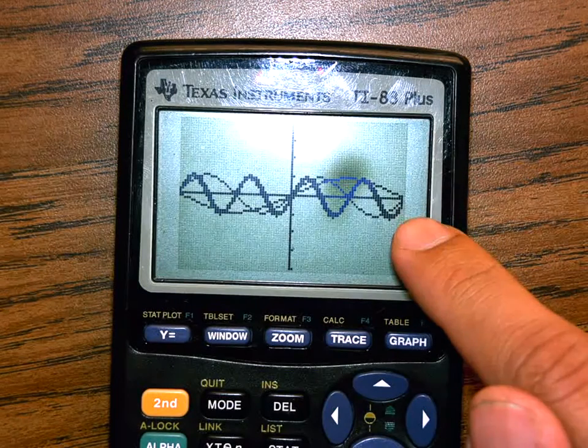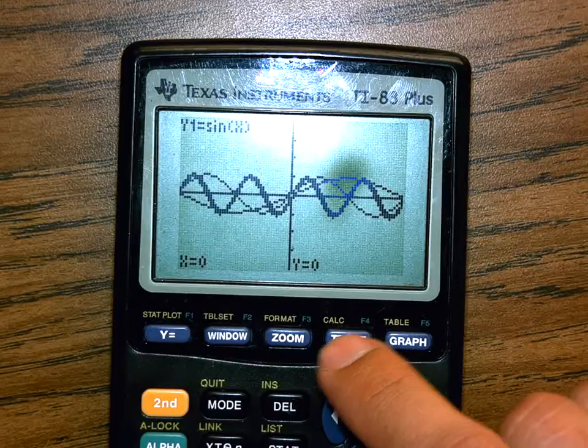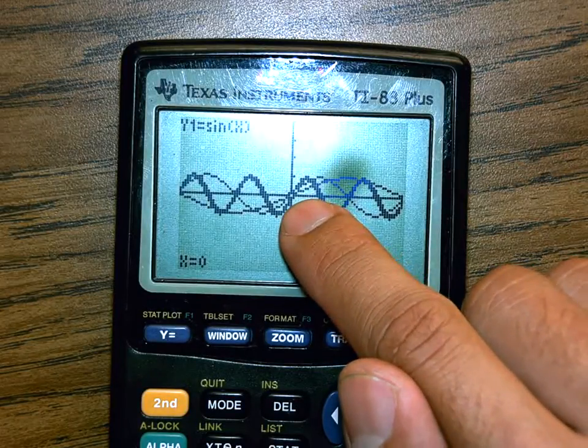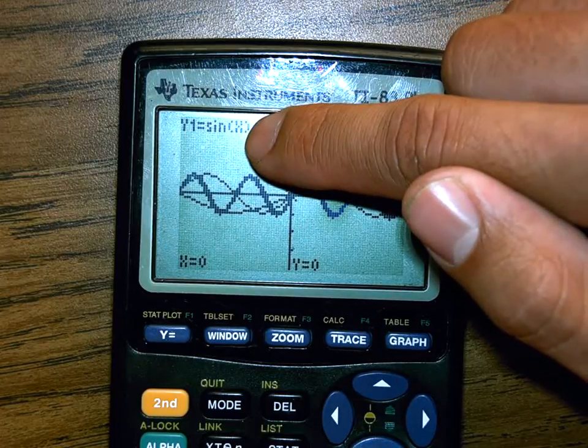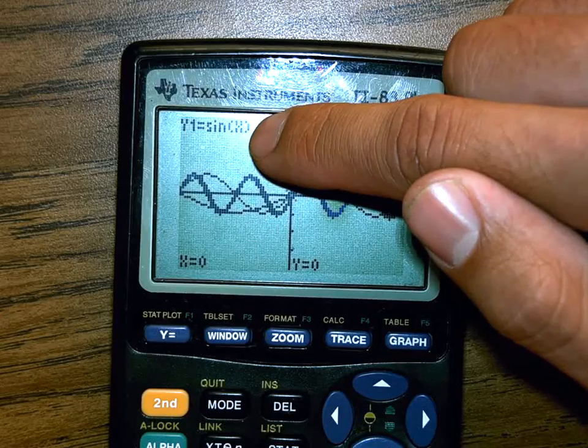Just want to show you one little thing. If I use the trace button on my calculator, if I press trace, what ends up happening is this little x shows up on my graph. And right now I am tracing the very first function I've entered. I'm tracing y1. I'm tracing sine of x.